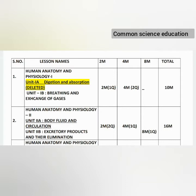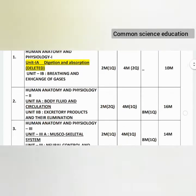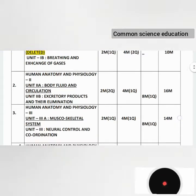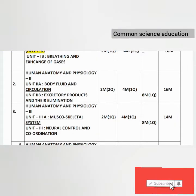Now the lesson-wise, unit-wise weightage content: Unit 1a — Human Anatomy and Physiology: Digestion and Absorption. Unit 1b — Breathing and Exchange of Gases has 2-mark questions (1 question) and 4-mark questions (2 questions), so the total for these two lessons comes to 10 marks.